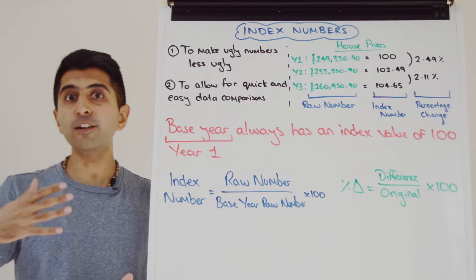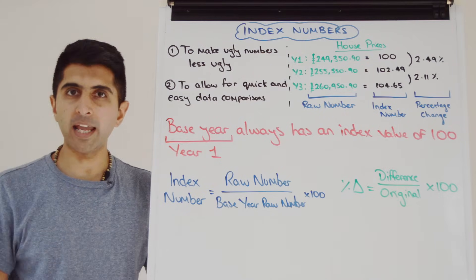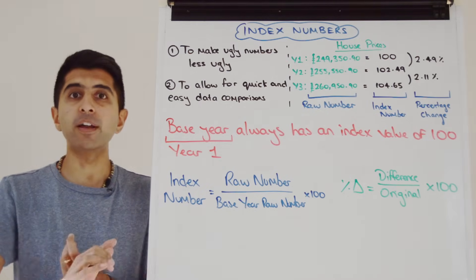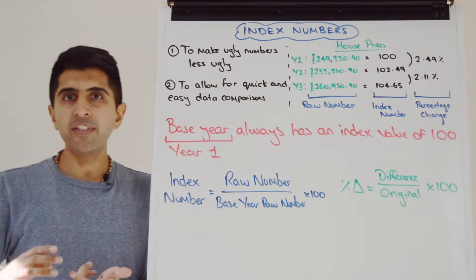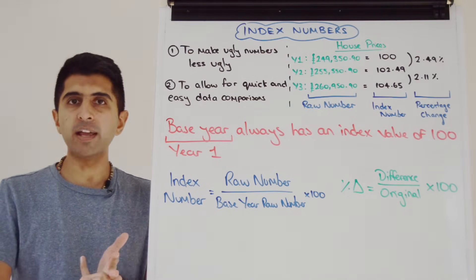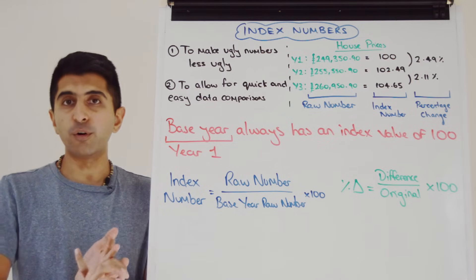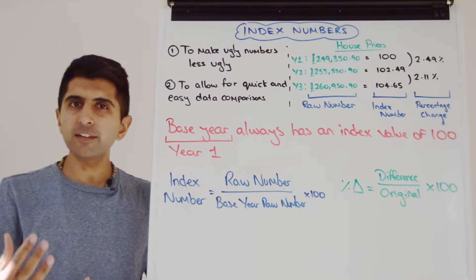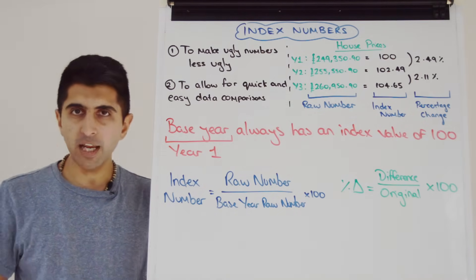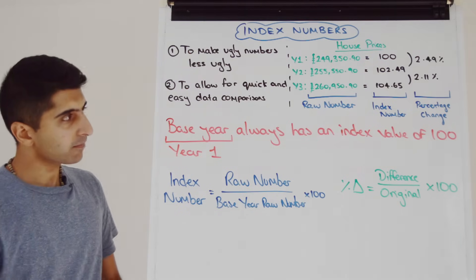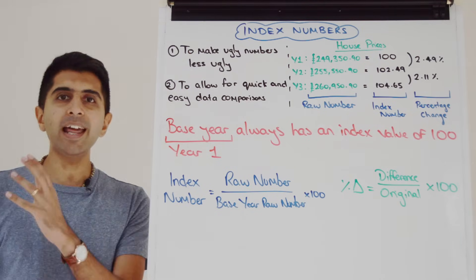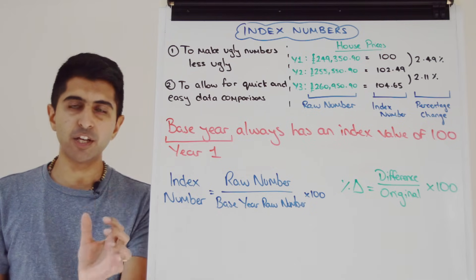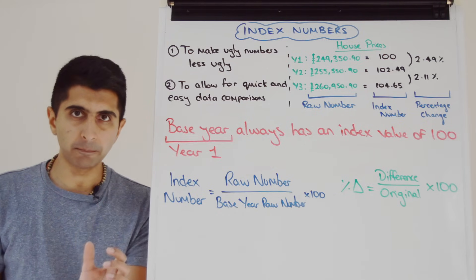Also in economics, we like to look at rates of change — normally annual rates of change. So the annual rate of growth, the annual rate of inflation, the annual rate of growth of house prices, the annual rate of growth of productivity. We like to look at rates of change and percentage changes a lot. Index numbers can make it very easy to calculate percentage changes as well.